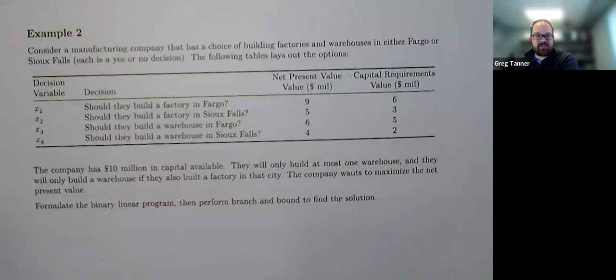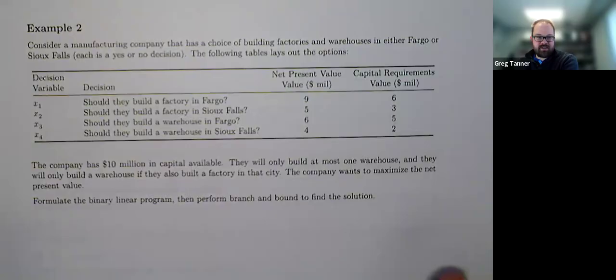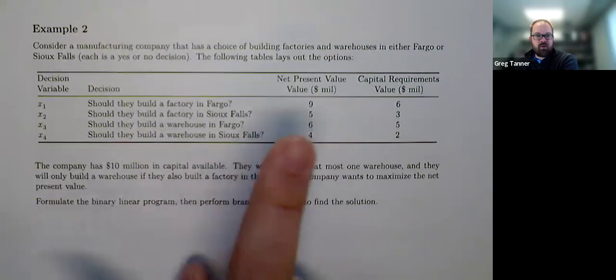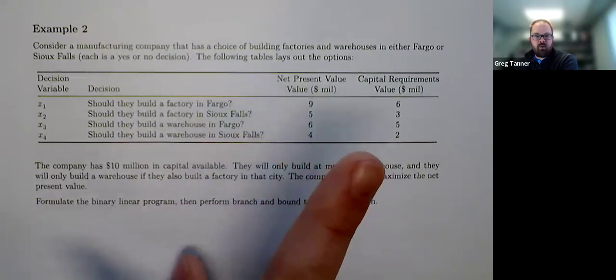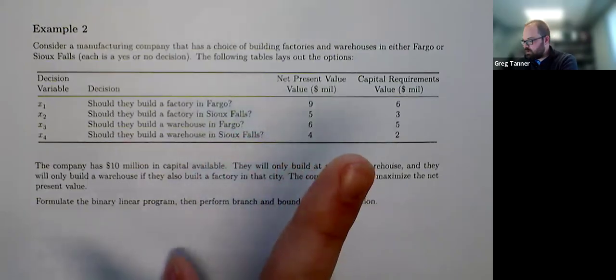Okay, let's do another branch and bound example so that you kind of get some of the nuances of what's going on. We'll be able to move much faster in this example, but we've got a company wanting to build some factories and warehouses in either Fargo or Sioux Falls.